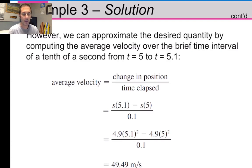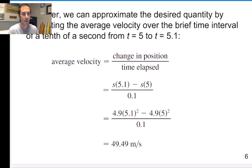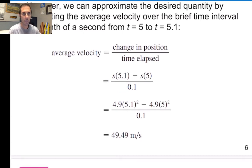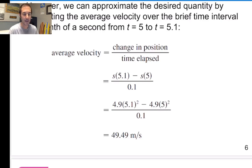We'll look at the average velocity between time equaling 5 and 5.1 seconds. Velocity equals change in position divided by change in time. Our denominator of 0.1 is 5.1 minus 5. The change in position is calculated using the position equation, plugging in 5.1 and 5 respectively. What we're really looking at is change in y divided by change in x — in other words, we're calculating slope. Plugging in those values, we get an average rate of change of 49.49 meters per second.